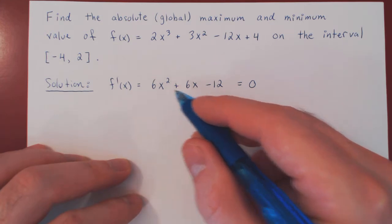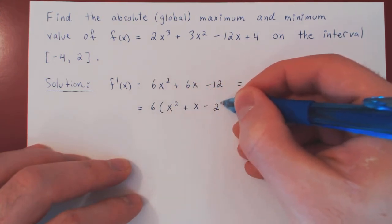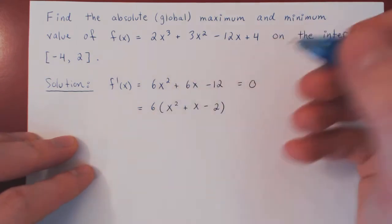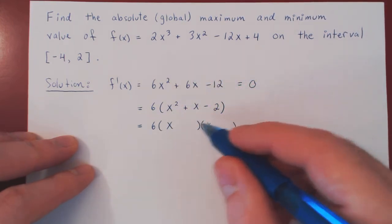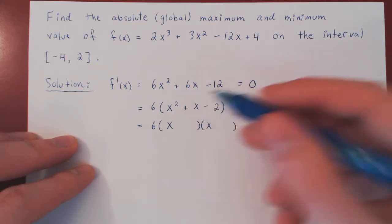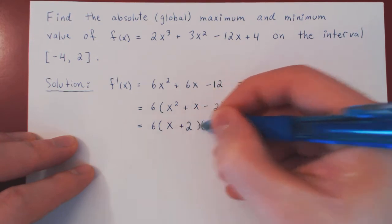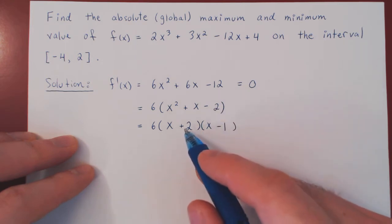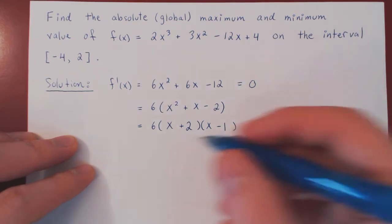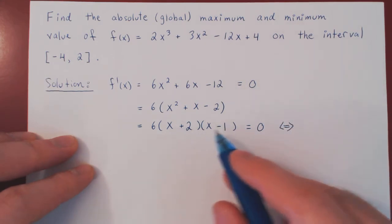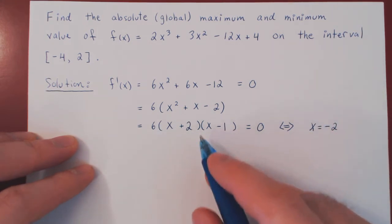Let's factor our quadratic. Every term is multiplied by 6, so we can factor out 6, leaving us with x squared plus x minus 2. We need two real numbers whose product is negative 2 and whose sum is positive 1 — that's plus 2 and minus 1. So the derivative factors as 6 times (x plus 2)(x minus 1), and this equals 0 when x plus 2 equals 0, giving x equals negative 2, or x minus 1 equals 0, giving x equals 1.